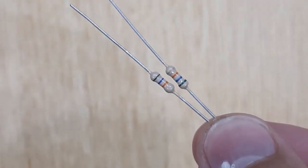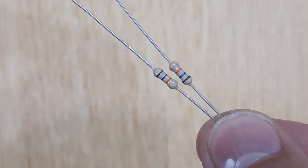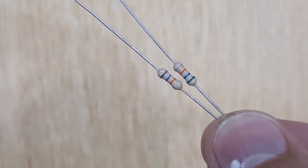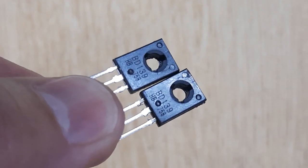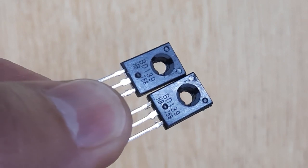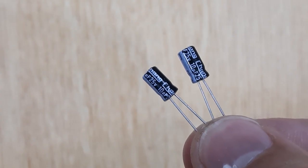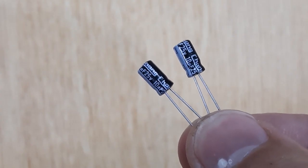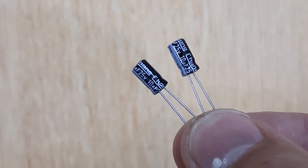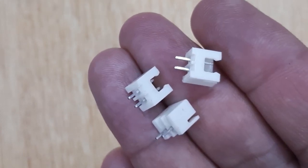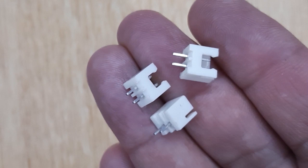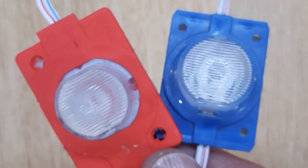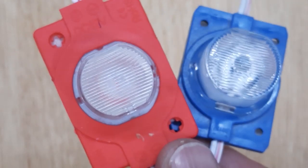56k ohms resistors, two pieces. BD-139 transistors, two pieces. 10 uF capacitors, two pieces. Wire connectors, three pieces. And 12 volt LEDs, two pieces.